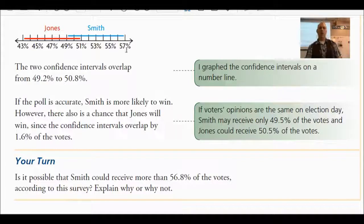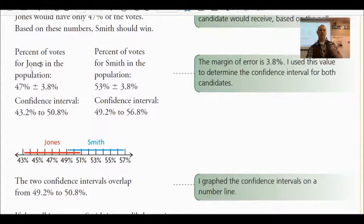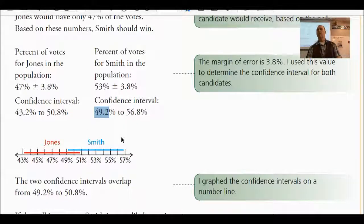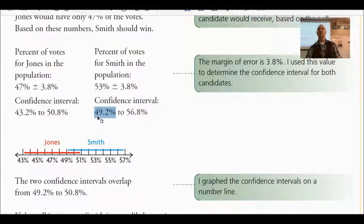Why is there overlap? For Jones, we have 47% of voters, but that's plus or minus 3.8%. If you add 3.8% to 47, you get 50.8% — that's the end of the red line. For Smith, although projected higher, the margin of error could be as low as 3.8% under that, so the beginning of the blue line is at 49.2. Smith could also be as high as 53 plus 3.8, which is 56.8 — the end of the blue line — or as low as 53 minus 3.8.